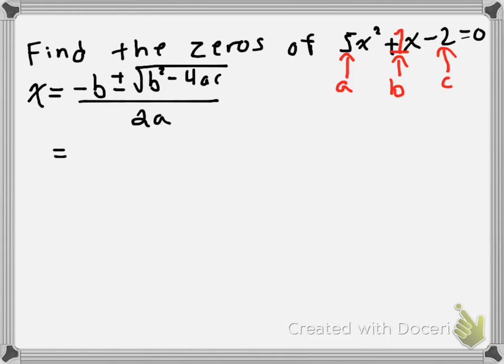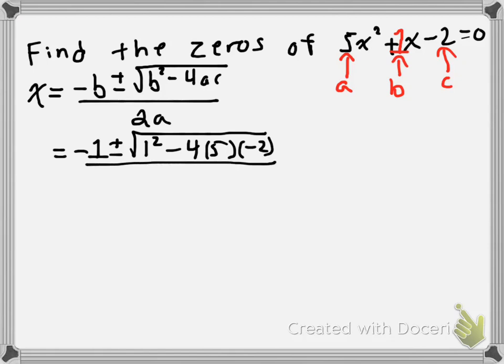So, what we're going to do is substitute our values for a, b, and c into the quadratic formula. Our b value is 1. So, we're going to have negative 1 plus or minus the square root of 1 squared minus 4 times our a value, which is 5, times our c value, which is negative 2. And that's all going to be divided by 2 times our a value, which is 5.